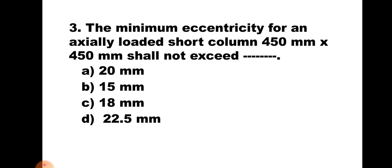Question number 3. The minimum eccentricity for an axially loaded short column of 450 mm × 450 mm shall not exceed: A) 20 mm, B) 15 mm, C) 18 mm, or D) 22.5 mm. According to IS 456-2000, the axially loaded column shall be designed for minimum eccentricity and that minimum eccentricity shall not exceed 0.05H, that is H/20. Here H is 450 mm, so 450/20 = 22.5. Hence the correct answer is D, 22.5 mm.